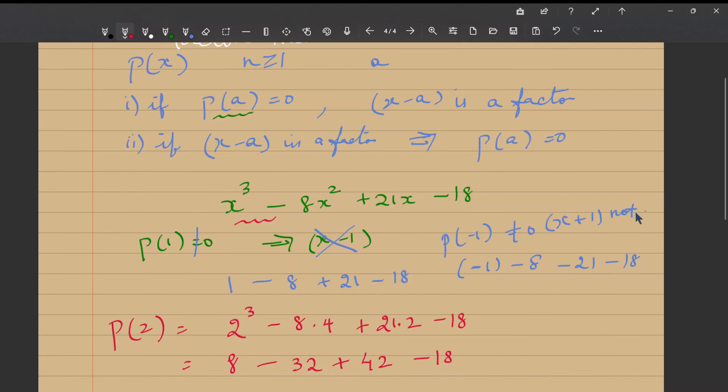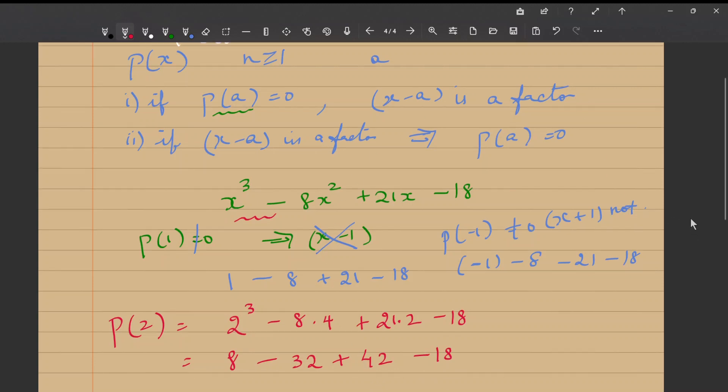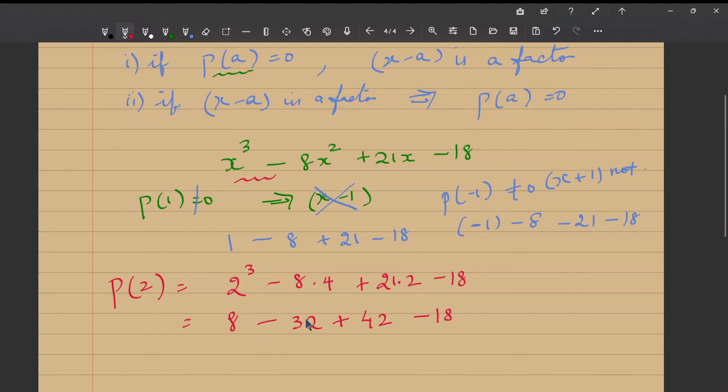Looks like it is going somewhere. Let me add the negatives first. -32 and -18 gives me, I will just show you, I am adding -32 and -18. It gives me -50. And now, let me add 42 and 8. Yes, I am getting 50. So P(2) is equal to 50 - 50 is equal to 0.